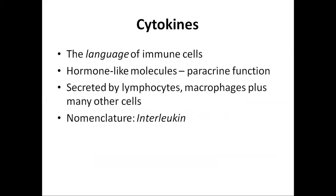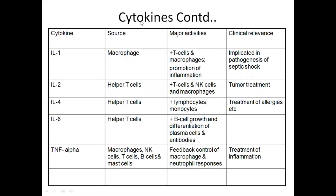Cytokines are proteins secreted by immune cells. They are hormone-like molecules with a paracrine function. Cytokines are secreted by lymphocytes, macrophages, and many other cells — they are interleukins. The family of cytokines consists of interleukin-1, 2, 4, 6, and tumor necrosis factor alpha.